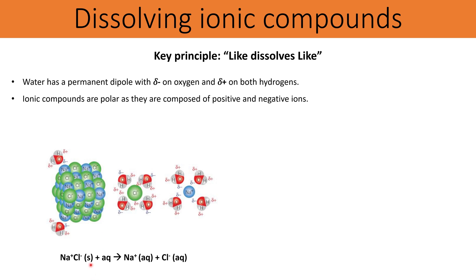So if we add sodium chloride to water then we get aqueous sodium ions and aqueous chloride ions during the dissolving process, and there will be an accompanying enthalpy change. Chloride ions will be completely surrounded by the delta positive charges on the hydrogens of water molecules, while sodium ions will be surrounded by the delta negative charges on the oxygen atoms.